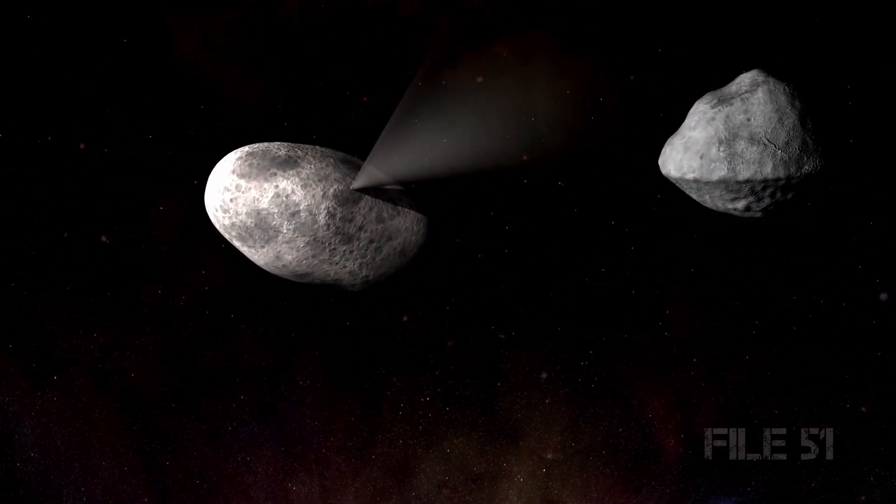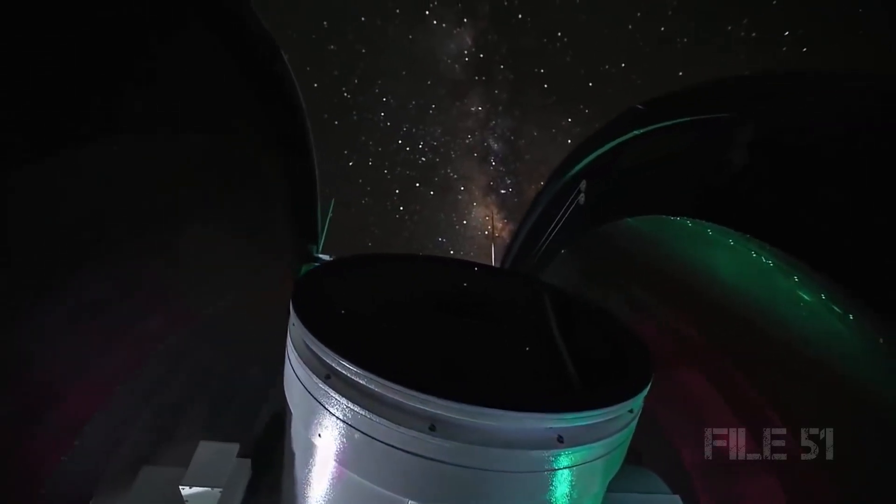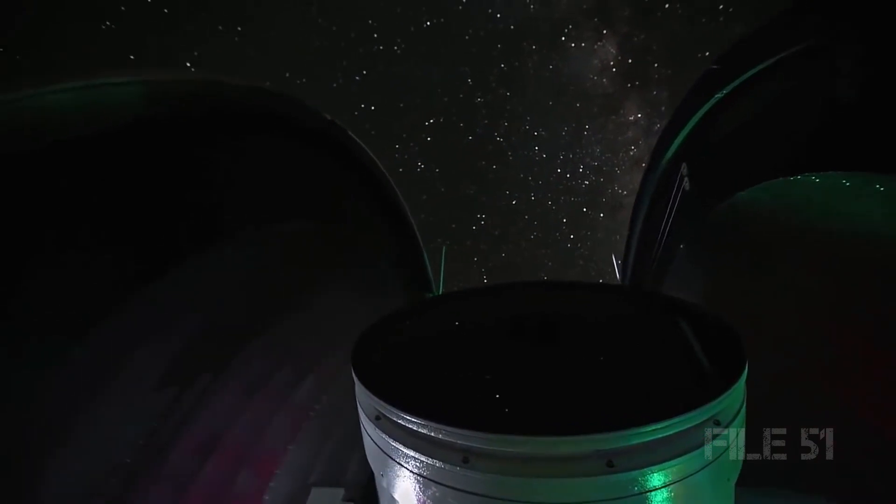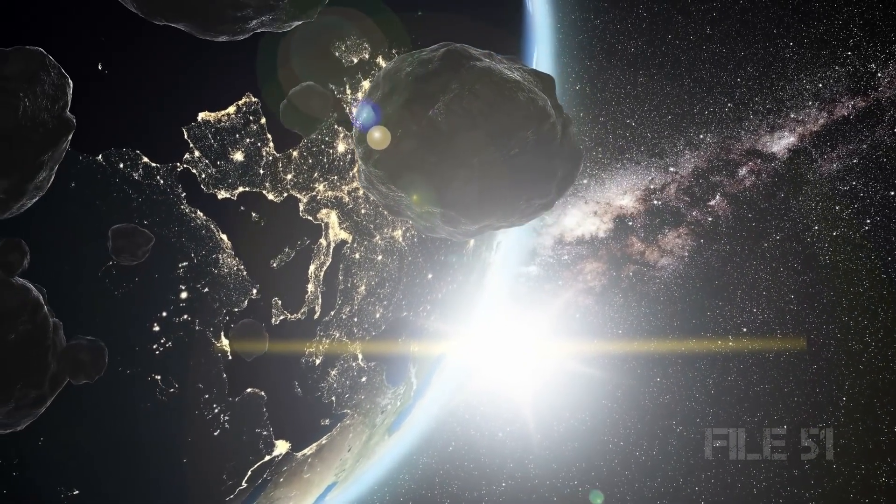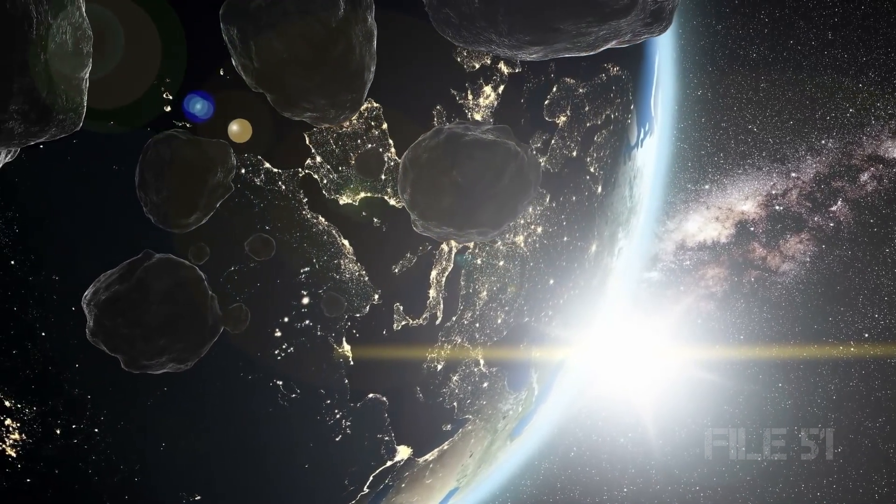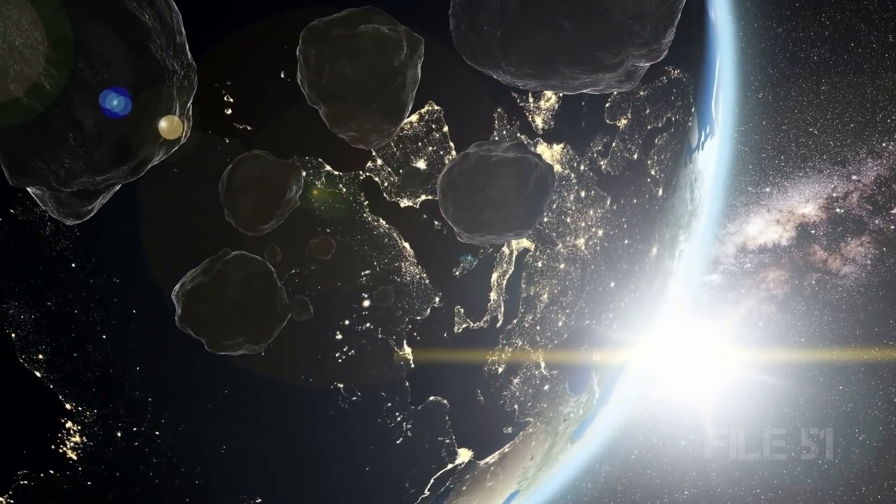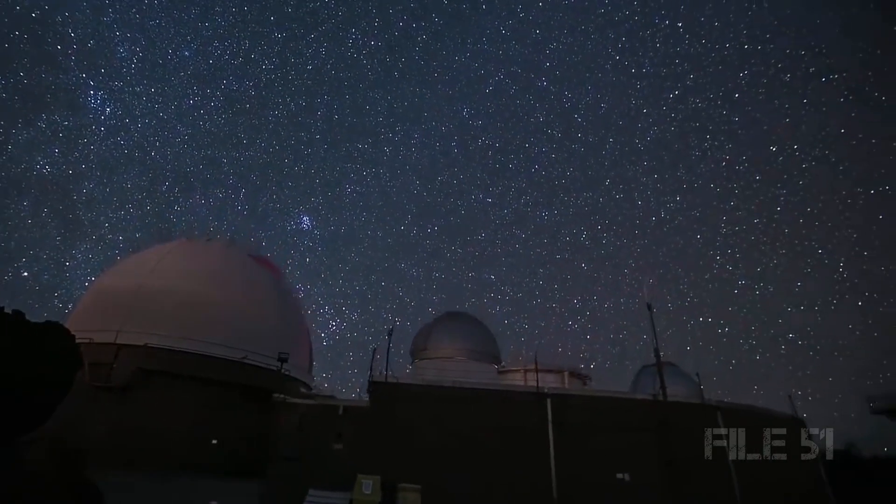However, astronomers first must find space rocks that pose a threat to our planet with enough time to try to alter their orbit. A giant rock lurking undetected, hidden in the sun's glare, could be discovered too late for scientists to do anything to alter its path if it's in a collision course with Earth. Currently, several different telescopes routinely and automatically scan the sky for them.